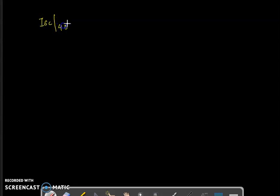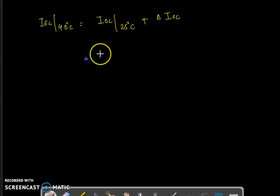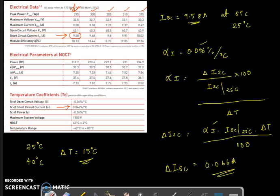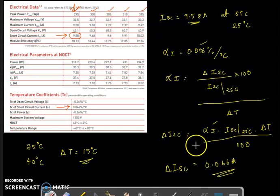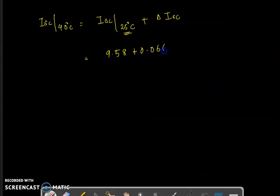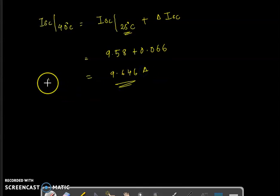The short circuit current at 40 degrees Celsius equals the short circuit current at standard test condition plus the change in short circuit current due to the change in temperature. So that is 9.58 plus 0.066 amperes, giving a final answer of 9.646 amperes. This is the short circuit current of this panel at 40 degrees Celsius.